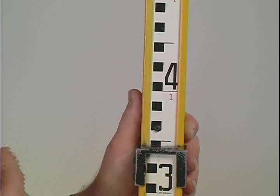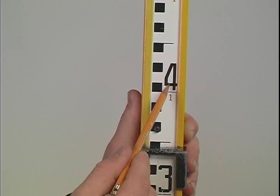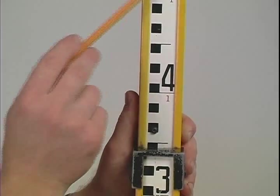Once we establish how many meters, the next thing we're looking for is how many decimeters. And each decimeter is indicated by the large black numbers.